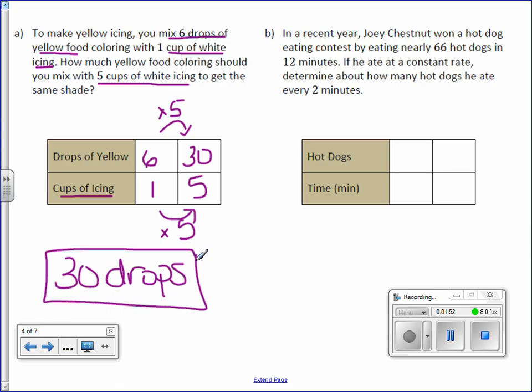Letter B. In a recent year, Joey Chestnut won a hot dog eating contest by eating nearly 66 hot dogs in 12 minutes. If he ate at a constant rate, determine about how many hot dogs he ate every 2 minutes.